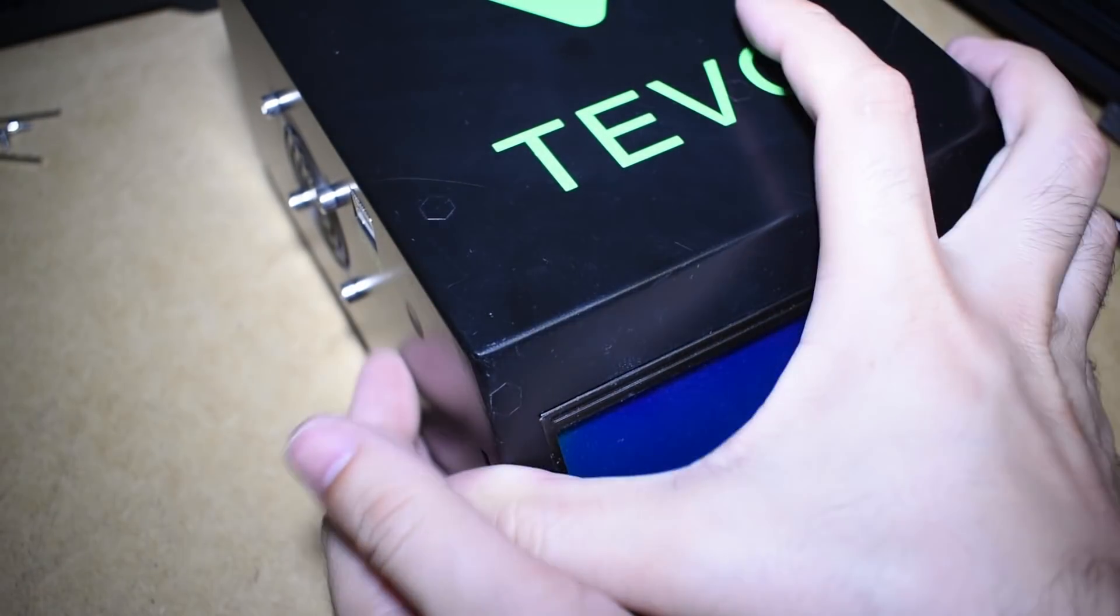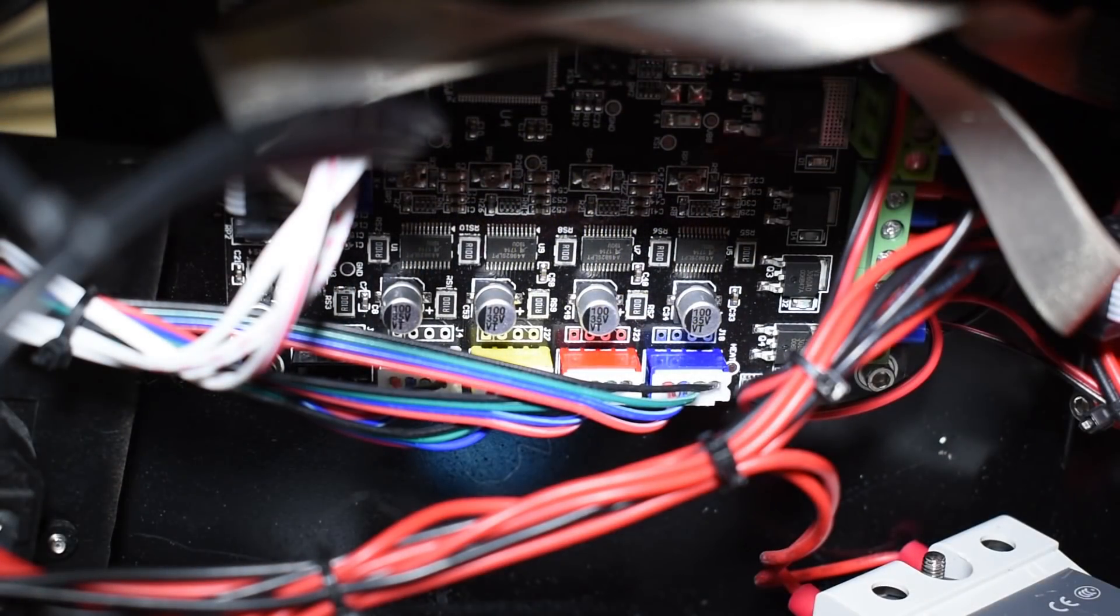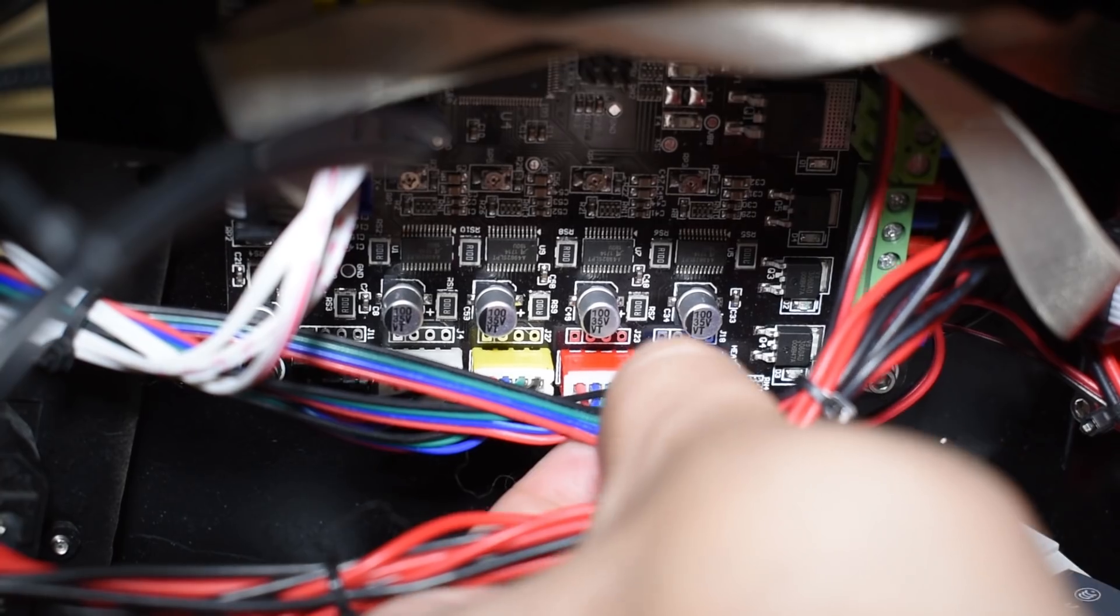The installation is very simple. You just need to open the controller and remove the cable from the axis you want to upgrade.